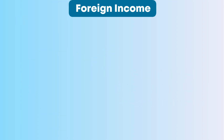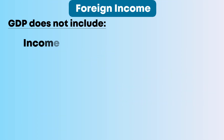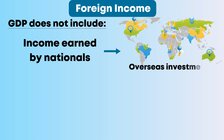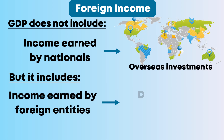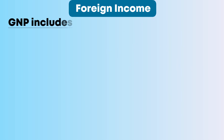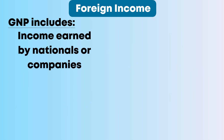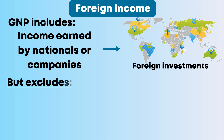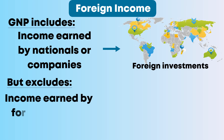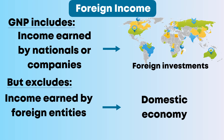Foreign income: GDP does not include income earned by nationals from overseas investments, but it includes income earned by foreign entities within the domestic economy. GNP includes income earned by nationals or companies from foreign investments, but excludes income earned by foreign entities within the domestic economy.